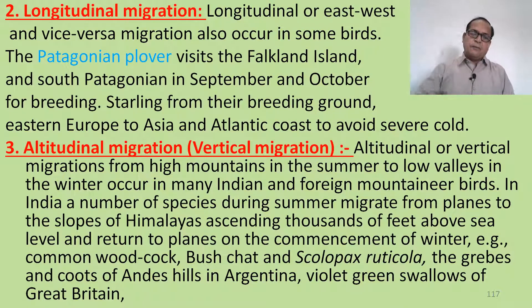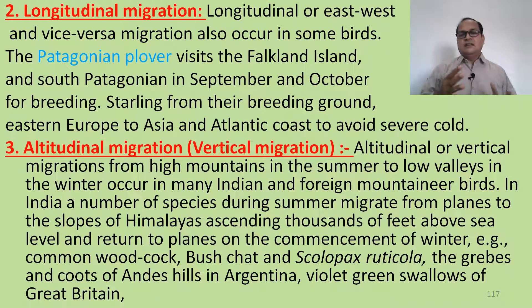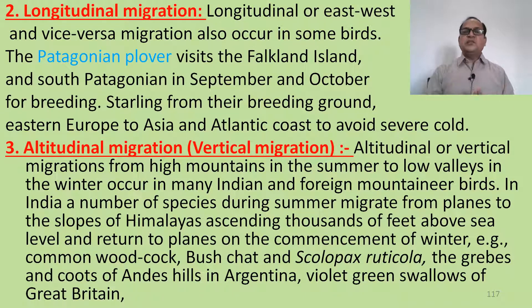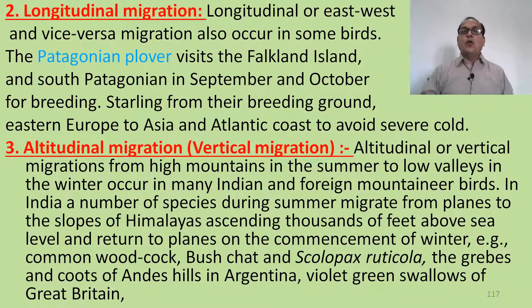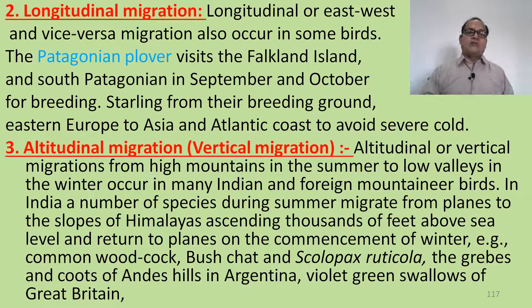The third type is altitudinal migration, which means vertical migration from plains up into the hills. Altitudinal or vertical migration from high mountains in summer to low valleys in winter occurs in many Indian and foreign mountain birds. In India, a number of species during summer migrate from plains to the slopes of the Himalayas, ascending thousands of feet above sea level, and return to the plains at the commencement of winter. Examples include the Common woodcock (Scolopax rusticola), grouse and coots of the Andes hills in Argentina, and the violet-green swallow of Great Britain.